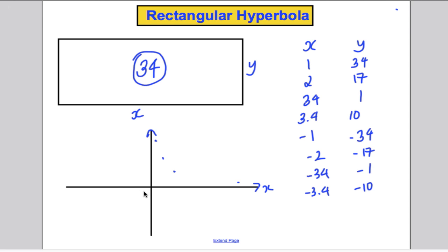And the same down here. It would be -1, -34, -2, -17, -34, -1. And look, hopefully you can see you're getting something that looks like this, this type of thing here. And that is where the idea of a rectangular hyperbola comes from.